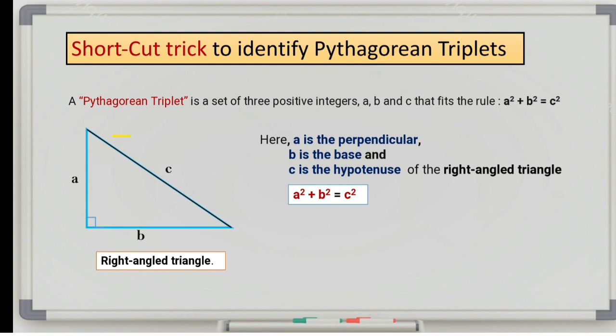Let us take an example 3, 4 and 5. If A is equal to 3, B is equal to 4 and C is equal to 5, then 3 square plus 4 square is equal to 5 square.